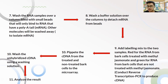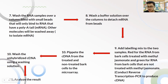We then wash the column with a buffer solution to detach the mRNA from the beads. We add labeling dyes to the samples — red for RNA from cells treated with methyl jasmonate, and green for RNA from cells not treated with methyl jasmonate. We then conduct reverse transcription to produce cDNA. The cDNA from both treated and non-treated cells is pipetted onto the microarray, unhybridized cDNA is washed away, and we analyze the results.